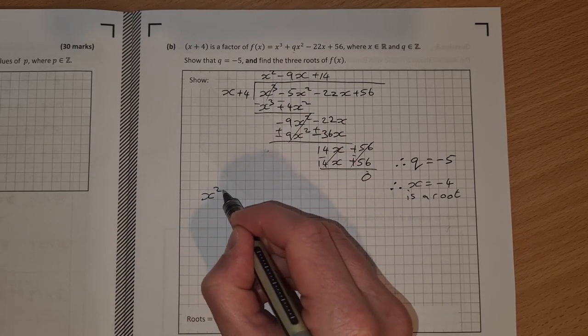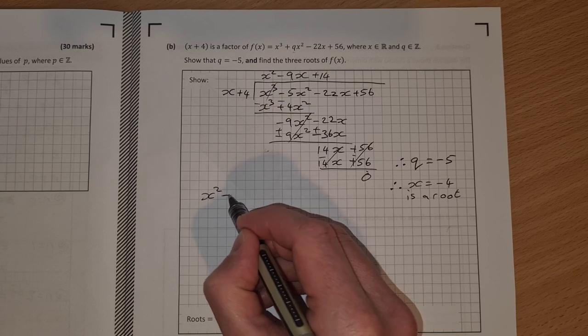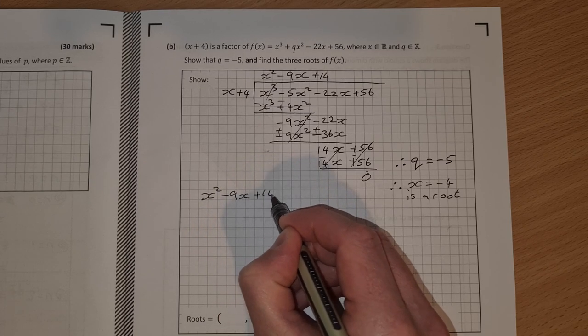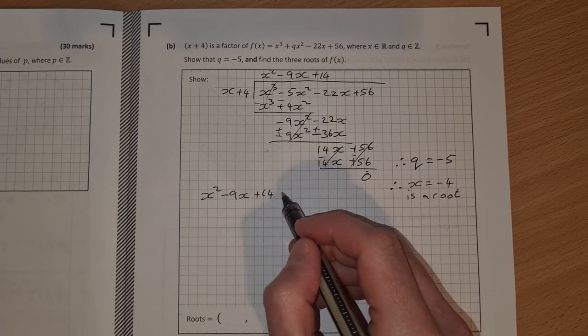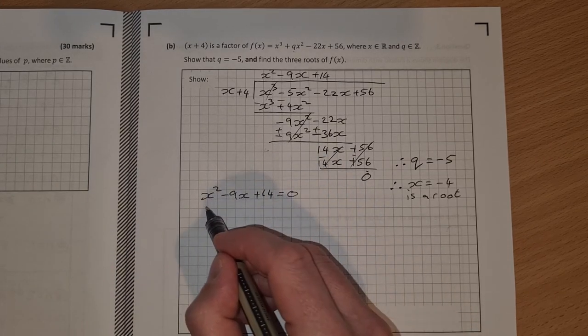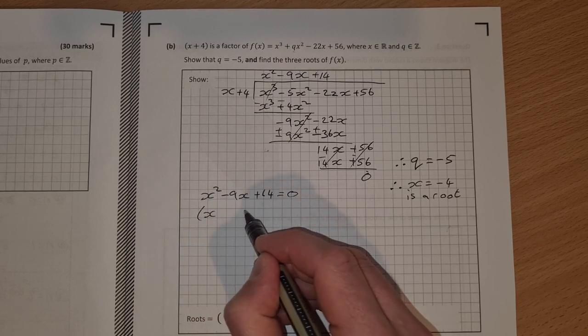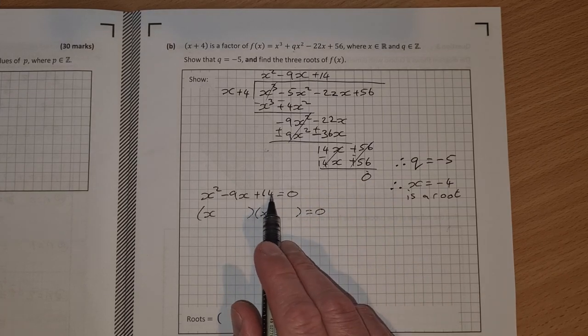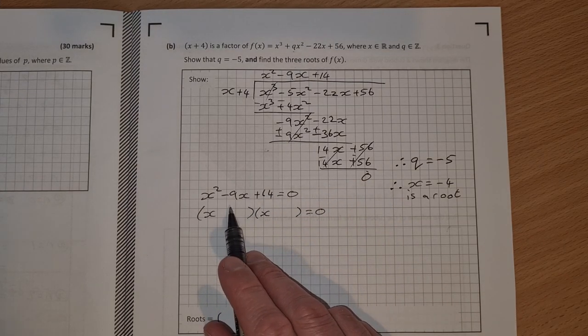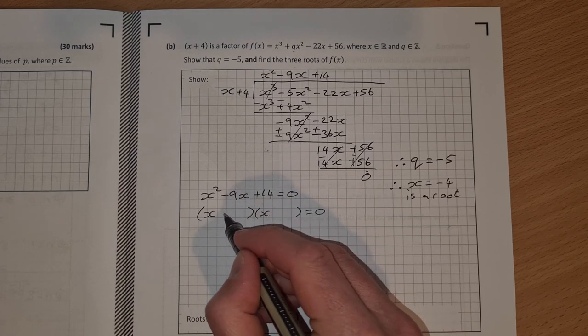So x squared minus 9x plus 14. And a simple little quadratic for me to solve there. So that's equal to zero. Factor the x by x and then factors of 14 that add together to give you minus 9. That'll be minus 7 by minus 2.